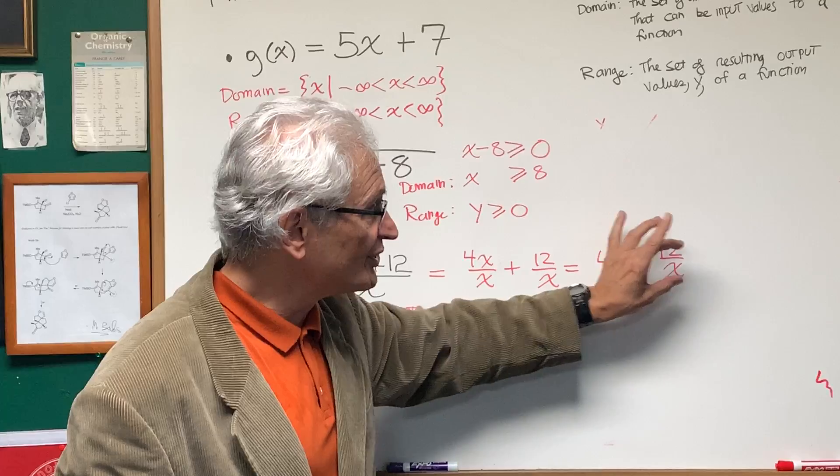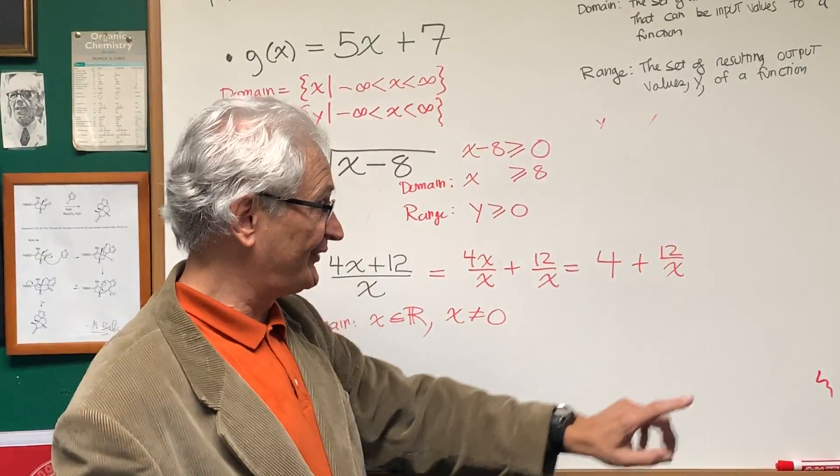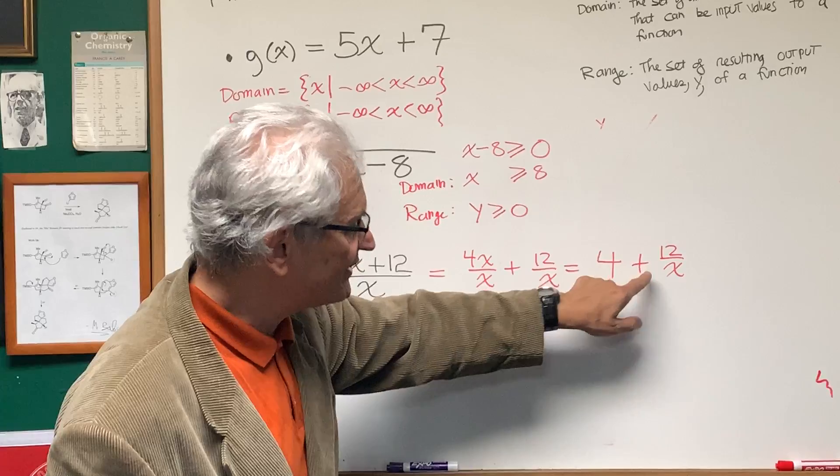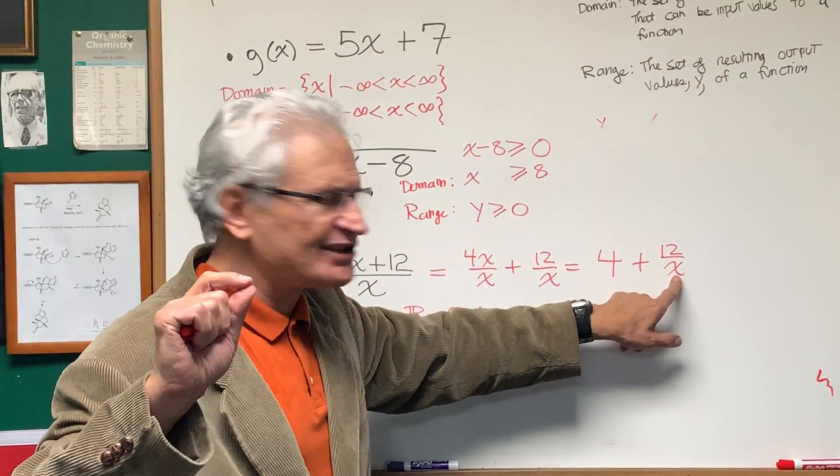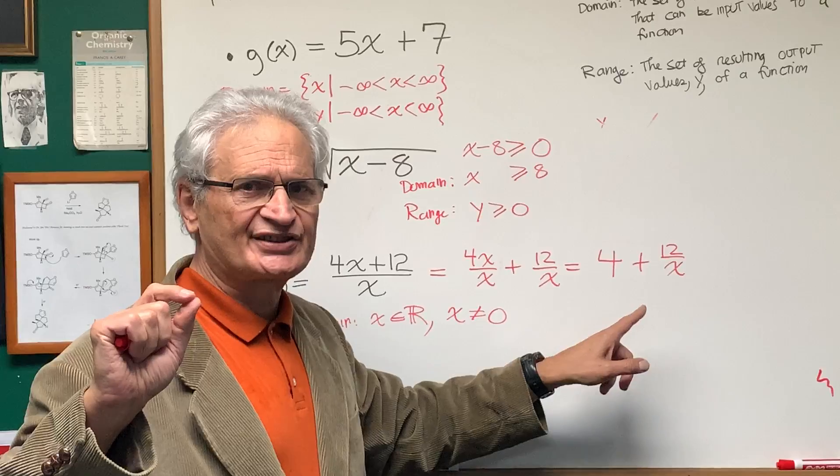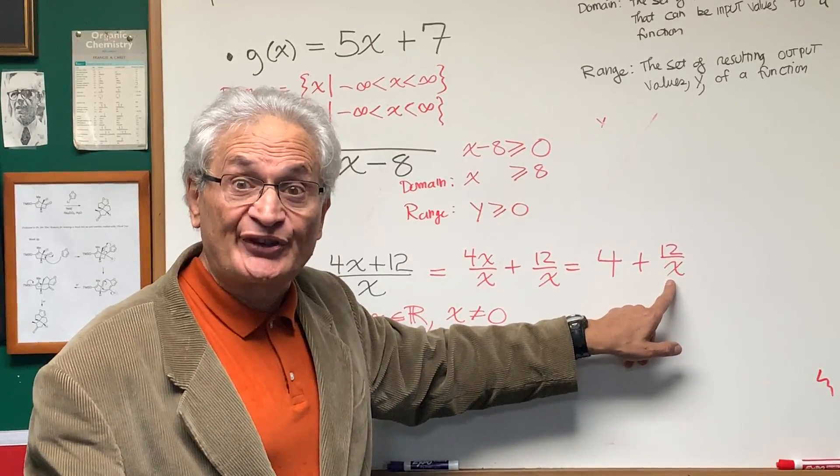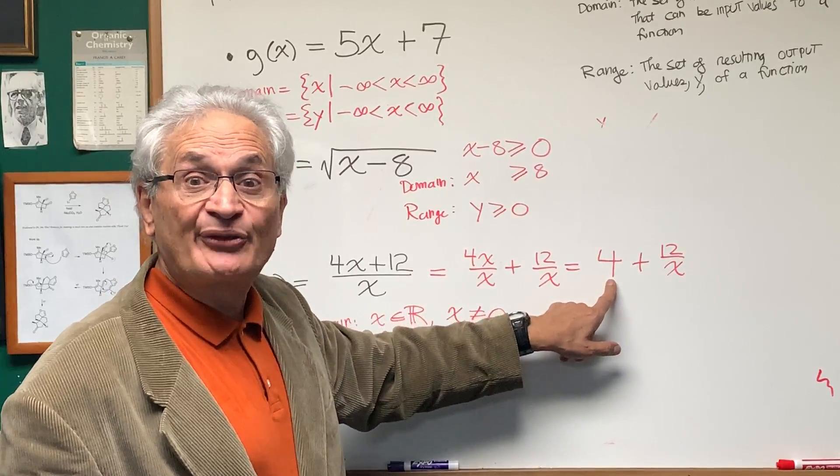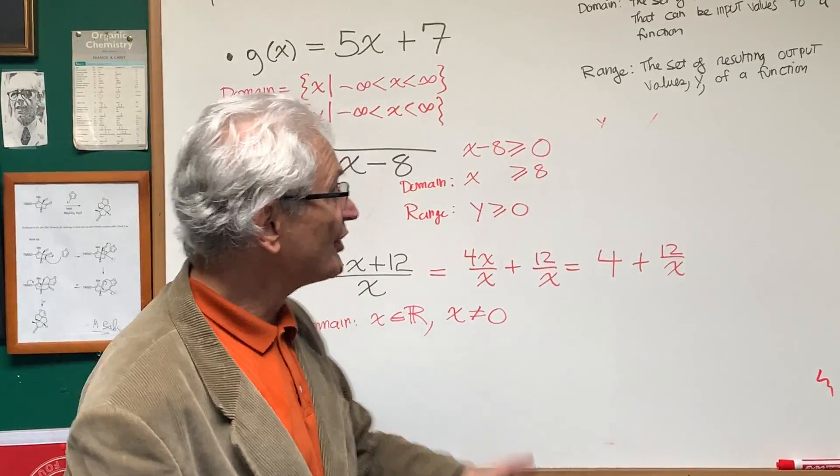As x goes to infinity, this number becomes smaller and smaller and smaller, either positive or negative if we're going to negative infinity. So we're always adding something to 4. No matter how infinitesimal, we're either adding something to 4 or subtracting something from 4. But since x can never reach infinity, the value will never reach 4.